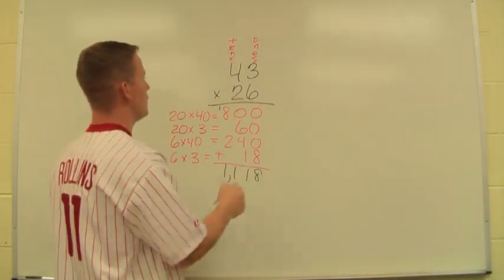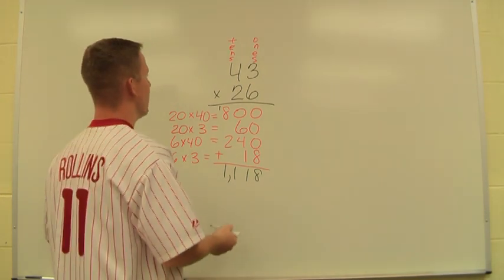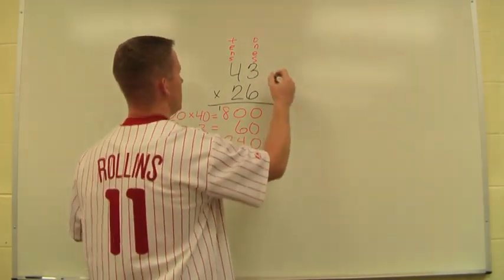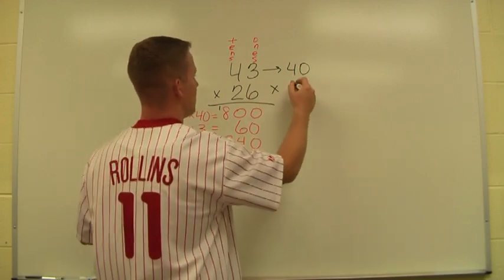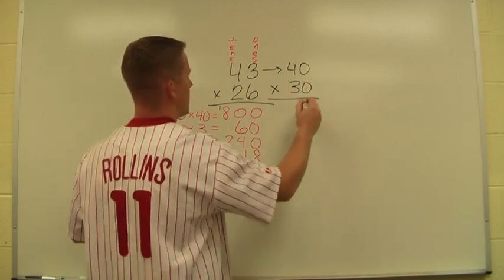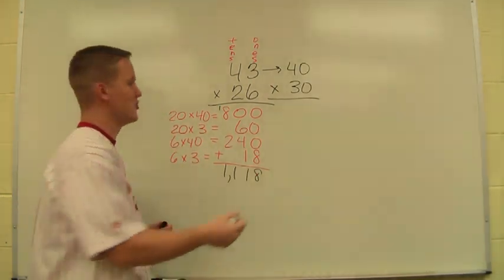Now sometimes it is helpful to do first an estimation. We have the students do an estimation. So instead of 43, we round that to 40 times, and instead of 26, we would round that to 30.